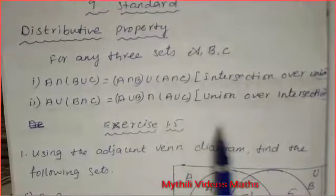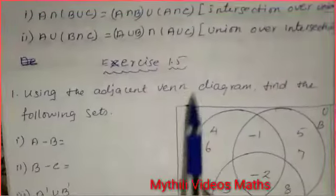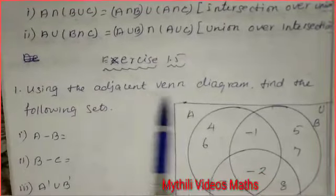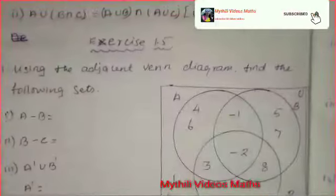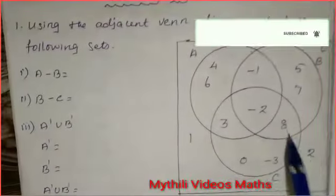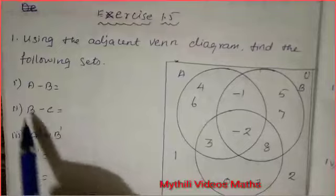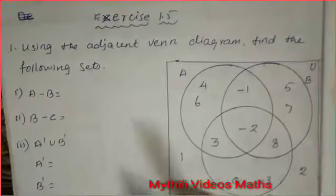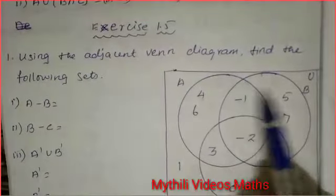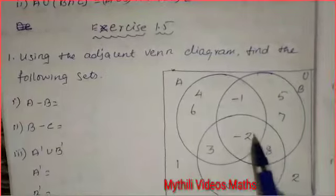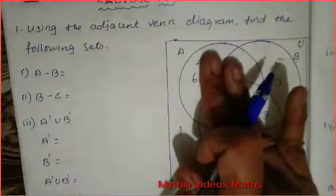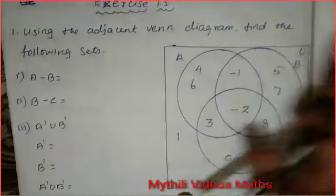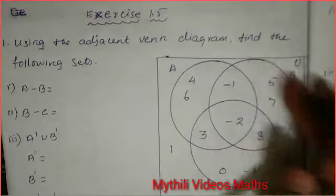Now we will see the sums in Exercise 1.5. Using the adjacent Venn diagram, find the following sets. They have given one Venn diagram and from that we have to find the answers. First question: A minus B. This is the A set, this is the B set, and this is the C set. For A minus B, we take the full A set and subtract B completely from it.